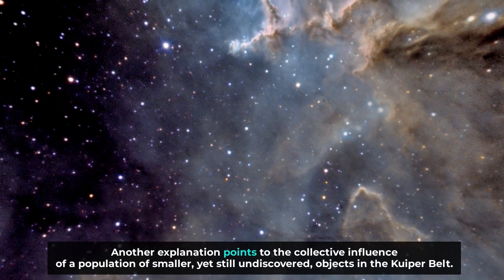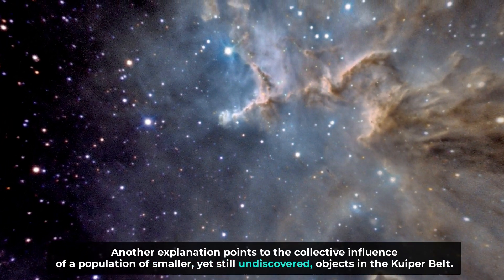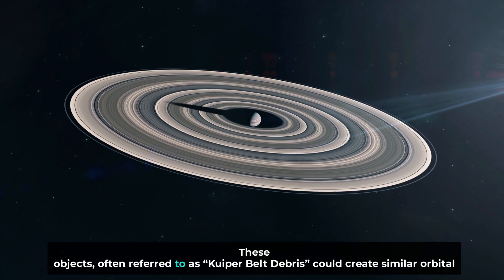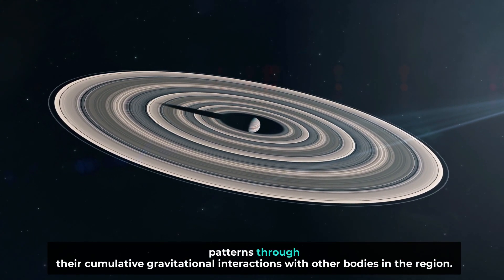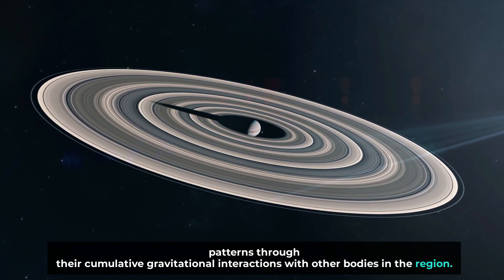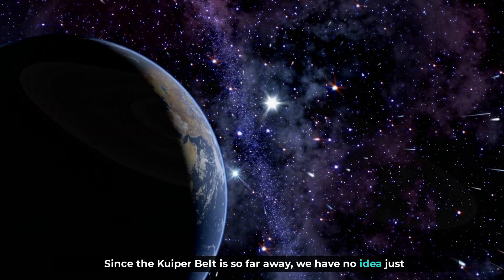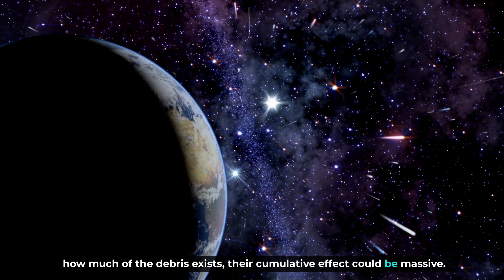Another explanation points to the collective influence of a population of smaller, yet still undiscovered, objects in the Kuiper Belt. These objects, often referred to as Kuiper Belt debris, could create similar orbital patterns through their cumulative gravitational interactions with other bodies in the region. Since the Kuiper Belt is so far away, we have no idea just how much of the debris exists. Their cumulative effect could be massive.